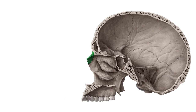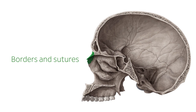Inferiorly, the nasal bones are attached to the lateral cartilage of the nose. The septal cartilage of the nose and the perpendicular plate of the ethmoid bone, bordered by the nasoethmoidal suture, lie behind the nasal bones.